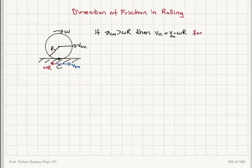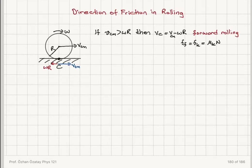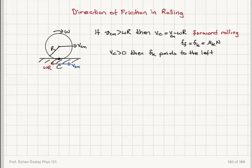This scenario we call forward rolling. In this case, because the contact point has a net velocity to the right, the force of friction that develops with the horizontal surface is kinetic friction, equal to the coefficient of kinetic friction times the normal force. Because the net velocity of the contact point is to the right, f_k points to the left.